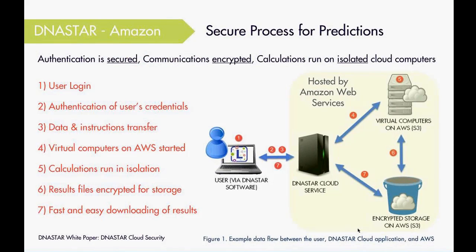Speaking of security — something that's very important for researchers today — our NOVA Cloud applications are hosted by Amazon AWS. Users can log in locally either through our application or through a website URL. The sequence information is sent to a cloud service portal funneled straight to Amazon Web Services, where the algorithms of NOVAFOLD, NOVAFOLD Antibody, and NOVADoc reside. Computation runs on AWS cloud computing resources, and the results are stored securely on AWS. At the user's discretion, you can download the resulting files to view in our molecular viewer.